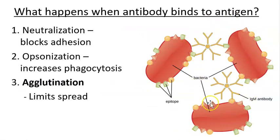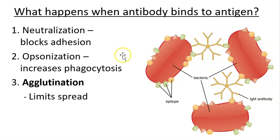A third function is agglutination. Some antibody molecules with multiple antigen binding sites can cross-link pathogens together, aggregating them and limiting their spread. Thinking back to exotoxins and endotoxins: we can develop antisera against exotoxins because they are protein-based and good immunogens, but LPS is difficult because the lipid portion is not a good immunogen, so we don't have effective antisera against it.